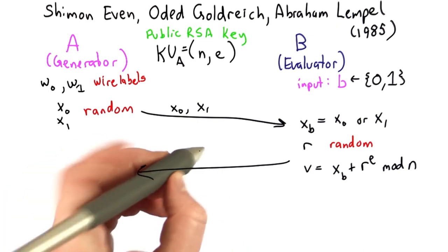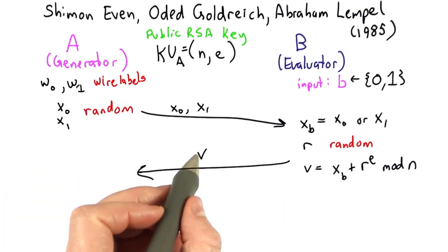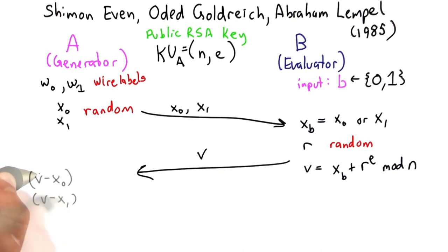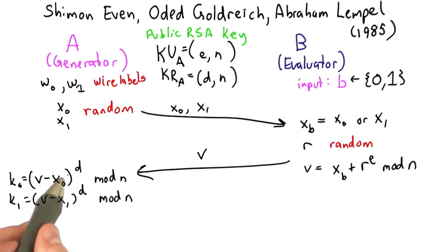That value is what's sent back to Alice. And Alice is going to perform two different RSA decryptions. So she knows the values that she selected for x0 and x1. She's going to subtract each of those from v. She'll decrypt it using her private key. And we'll call the first one k0, that was the one constructed using x0, and the second one k1, that was the one constructed using x1.